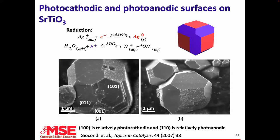Those are bulk samples. The same thing happens with small, tiny crystals of strontium titanate — silver only collects on the 100 surfaces.